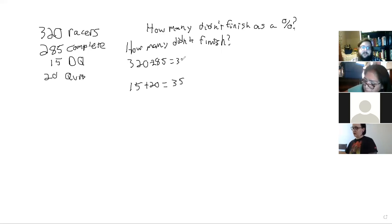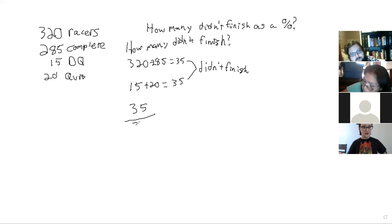So that's 35 people did not finish. At that point we take our 35 people and divide it by 320. Then that will be the percent that we have. So 35 divided by 320 is 0.109.